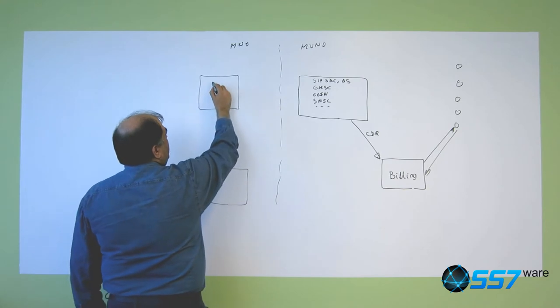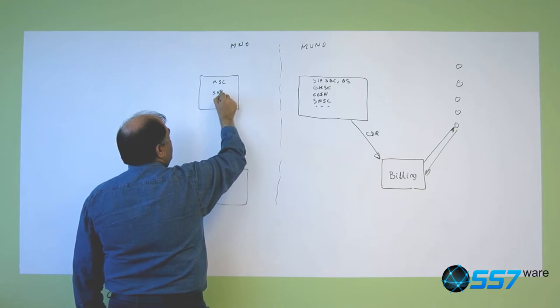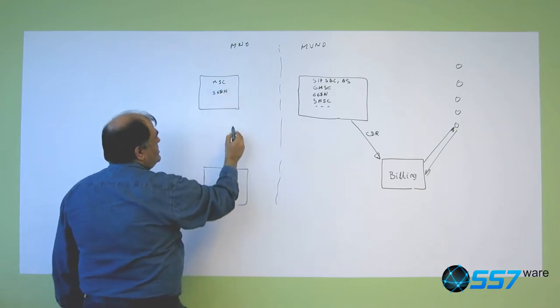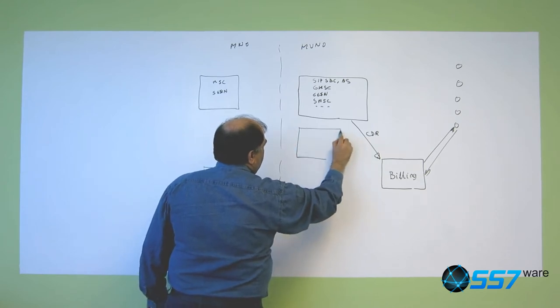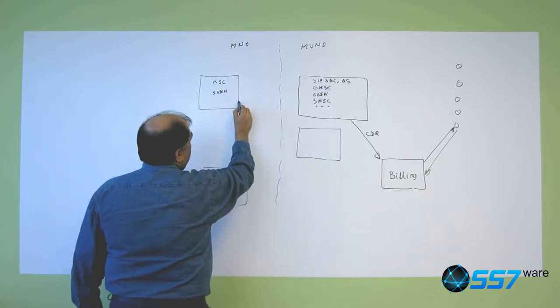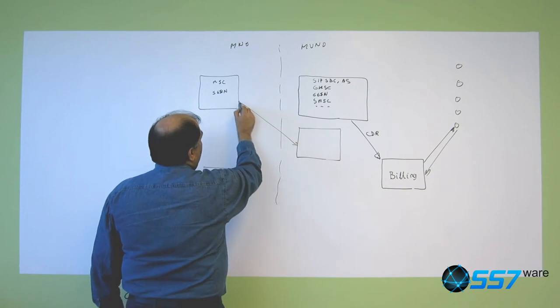The equipment can be something like MSCs and the SGSNs, and all these could generate third-party CDRs. So use something like Camel here.